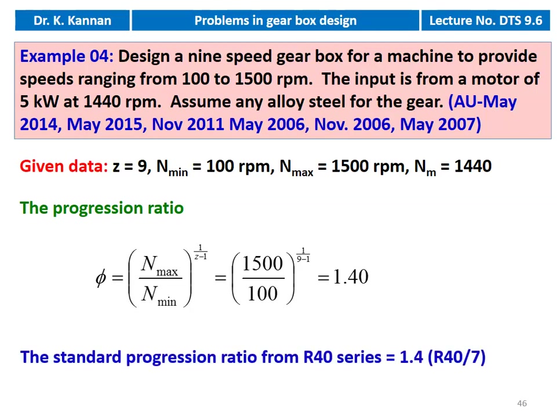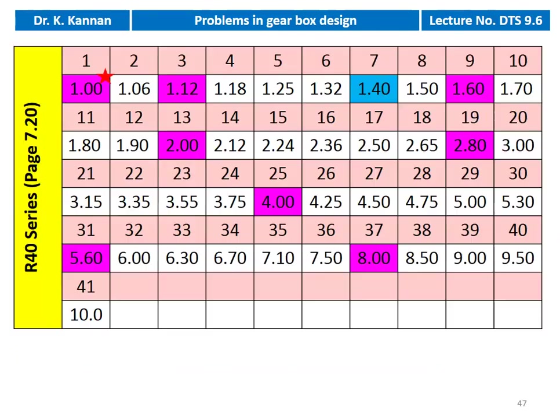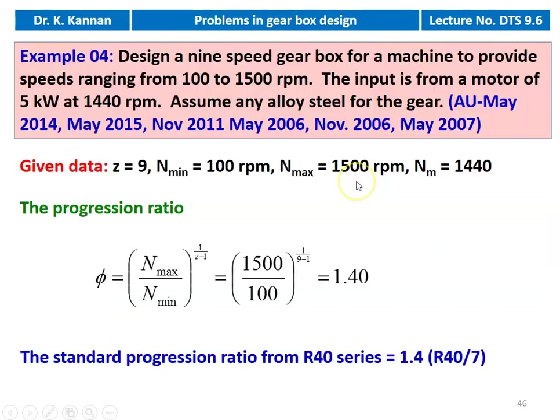We have the standard progression ratio in the 1.40 series — this is R40 by 7. The calculated value is directly available in the standard, so we continue with the value 1.4. This is the R40 series from the PSG data book, page number 7.20, where the progression ratio is shown starting from 1, 1.06, 1.12, 1.18, and so on up to 9.5. Our progression ratio 1.40 equals R40 by 7.